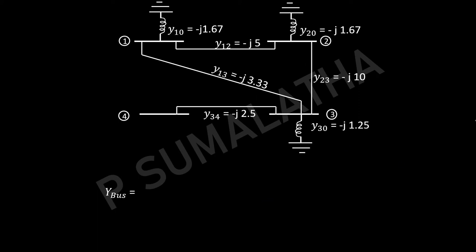So let us form the Y-bus. We have 4 buses, so the Y-bus matrix will be 4 by 4. Y11 is the sum of admittances connected to the first bus — three lines are connected — giving minus J1.67 plus minus J5 plus minus J3.33, which totals minus J10. For Y12, we take the negative of the admittance between buses 1 and 2: minus of minus J5 equals plus J5. If you have any confusion, mark the bus numbers on the matrix.